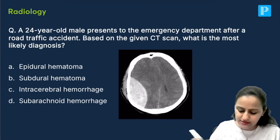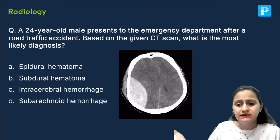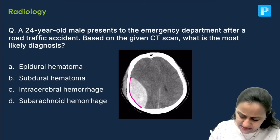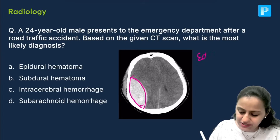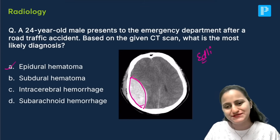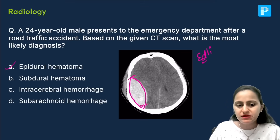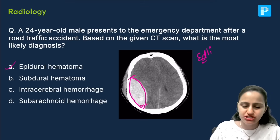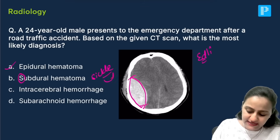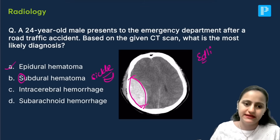The next question asks for the diagnosis. Look at the classical shape of the hemorrhage — white hyperdense, biconvex or lentiform shape. This is EDH (epidural hematoma). For subdural hematoma, remember S4S: subdural is sickle-shaped or crescent-shaped. This biconvex lentiform shape is EDH.